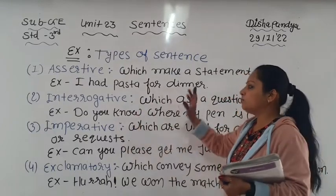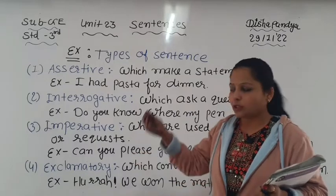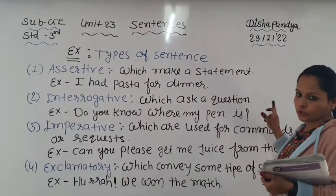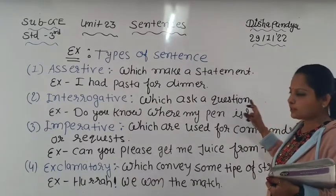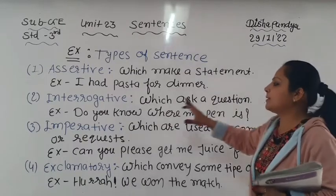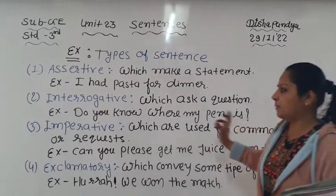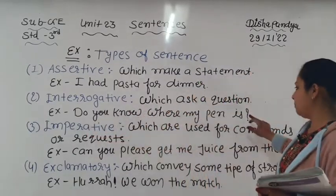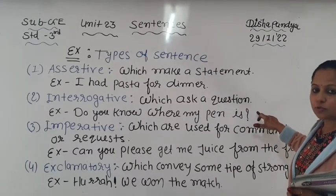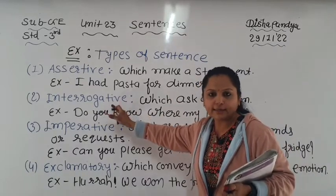Number two: interrogative - which asks a question. Whenever we need to ask something in a sentence, it becomes interrogative. For example: 'Do you know where my pen is?' The sentence starts with a capital letter and ends with a question mark. Whenever a sentence has a question mark, it becomes an interrogative sentence.